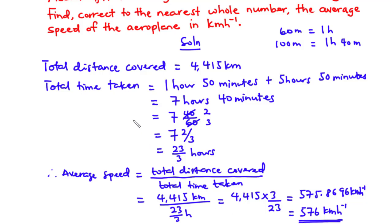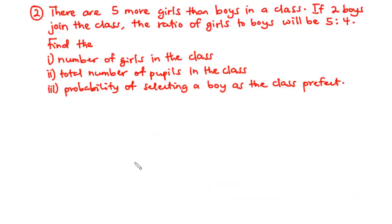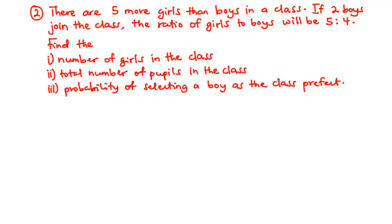Let's solve the second question. Our next question is BECE 2015 question 6b. There are 5 more girls than boys in the class. If 2 boys join the class, the ratio of girls to boys will be 5:4. Find: (i) the number of girls in the class, (ii) the total number of people in the class, (iii) the probability of selecting a boy as the class prefect.